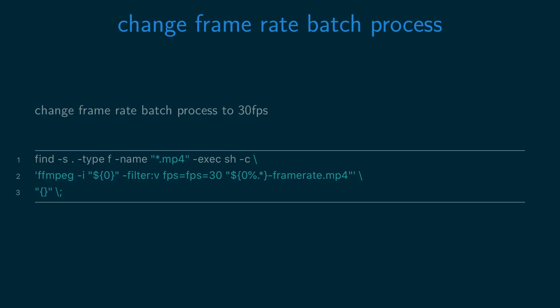You can batch process videos to change the frame rate using the find command and ffmpeg. In this case, we're changing the outfile name to -framerate.mp4 so we don't overwrite the original files.